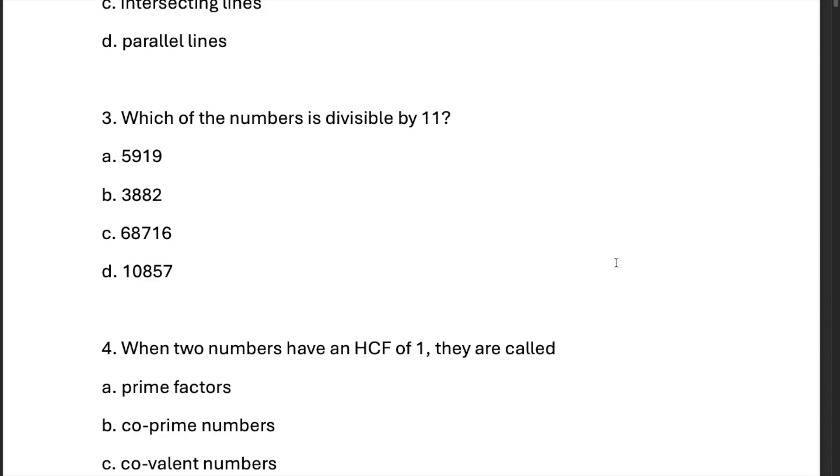And subtract it from the sum of the even numbers going from right to left. What about the last one? 7 plus 8 plus 1 would be 16 minus 5 plus 0. That is 11. That is divisible by 11, so the answer is D.